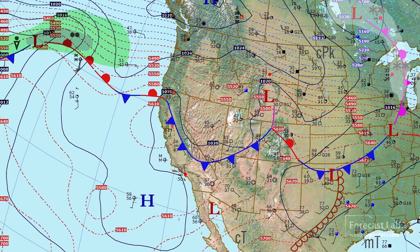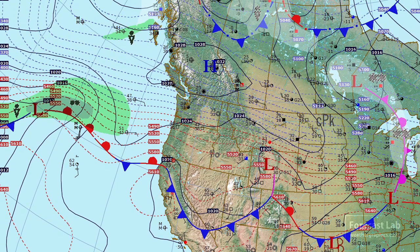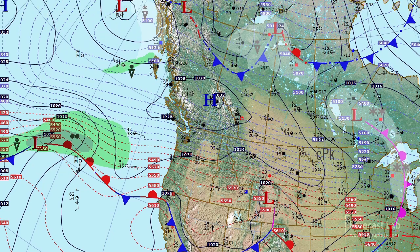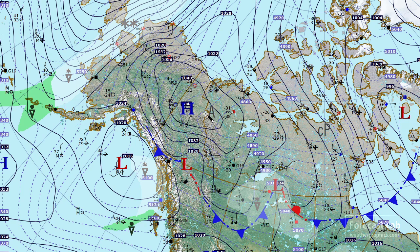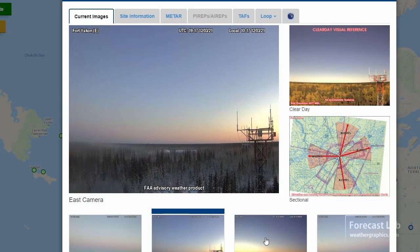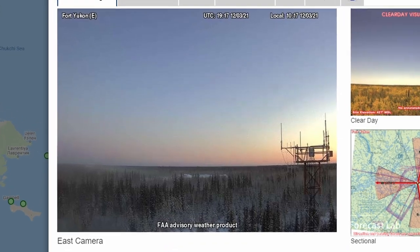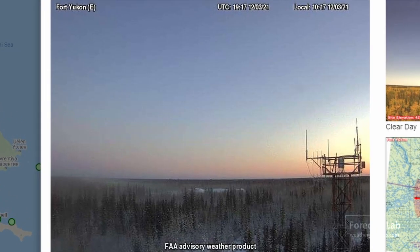Things do seem to be quieting down in the Pacific region. We've got one little storm system way off the coast of Oregon, and then heading up into Alaska, we're seeing some definite indications of winter. An Arctic air mass, 1044 millibars, centered on Dawson, Yukon. Temperatures at minus 45 at Fort Yukon and minus 44 at Old Crow.